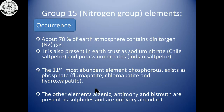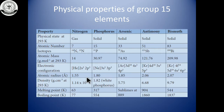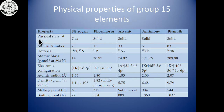Other Group 15 elements — arsenic, antimony, and bismuth — are very rare. Regarding physical properties, in standard temperature, nitrogen exists as a gas, while phosphorus, arsenic, antimony, and bismuth exist as solids. Nitrogen has two isotopes and phosphorus has one, similarly for arsenic, antimony, and bismuth.